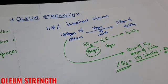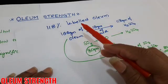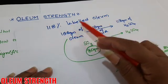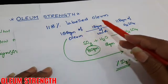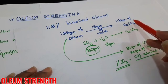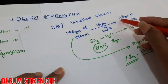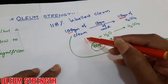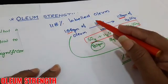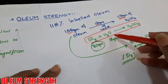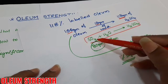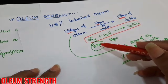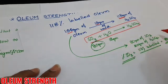To recap: 118% labeled volume means 100 grams of oleum reacts with 18 grams of water and yields 118 grams of sulphuric acid — 100 grams from oleum and 18 grams from water. As per the equation, 18 grams of water reacts with 80 grams of SO₃, so 80% of SO₃ is present in this labeled volume.